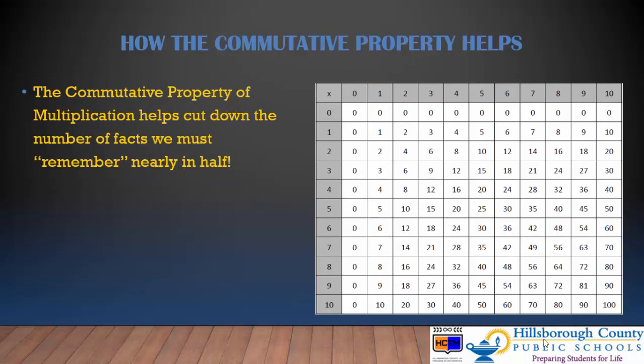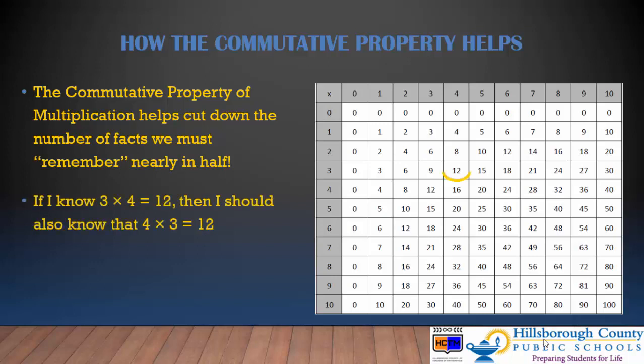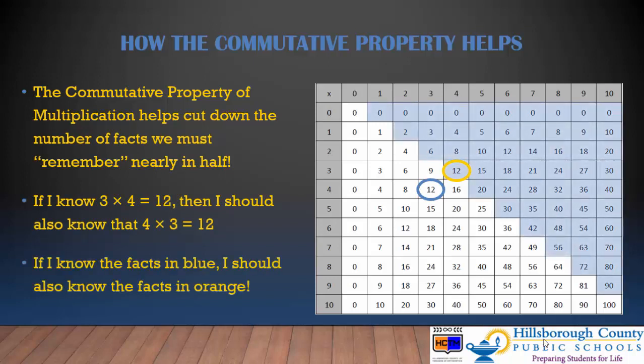The commutative property of multiplication helps cut down on the number of facts that we must remember nearly in half. If I know three times four is 12, then I should also know that four times three is 12. So if I know all of these facts in blue, then basically I should also know all the facts in orange. That looks much easier than trying to understand all of these facts separately.